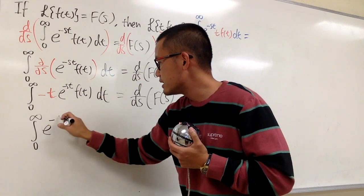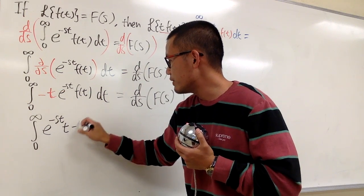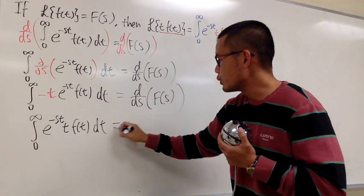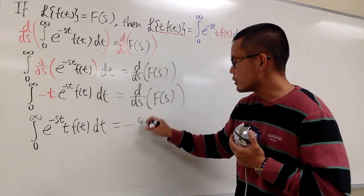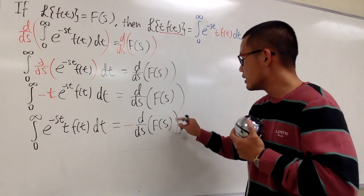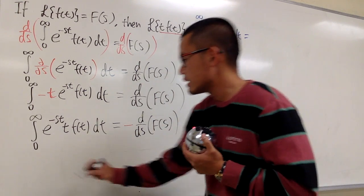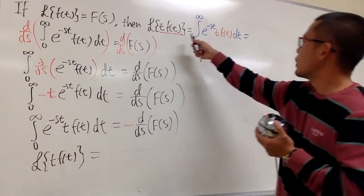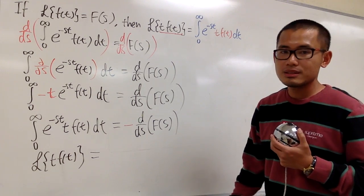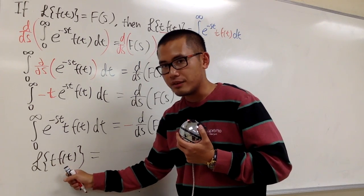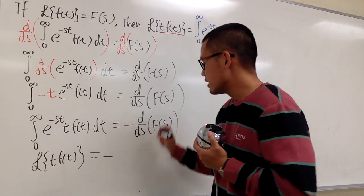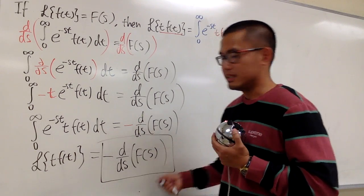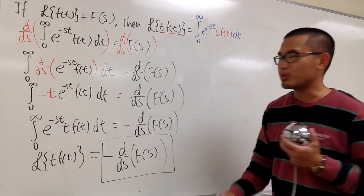Rewriting: we have the improper integral from 0 to infinity of e^(-st) times t times f(t) dt, equal to negative d/ds of F(s). Dividing both sides by negative 1, the Laplace transform of t times f(t) equals negative the first derivative with respect to s of F(s). That's the result.